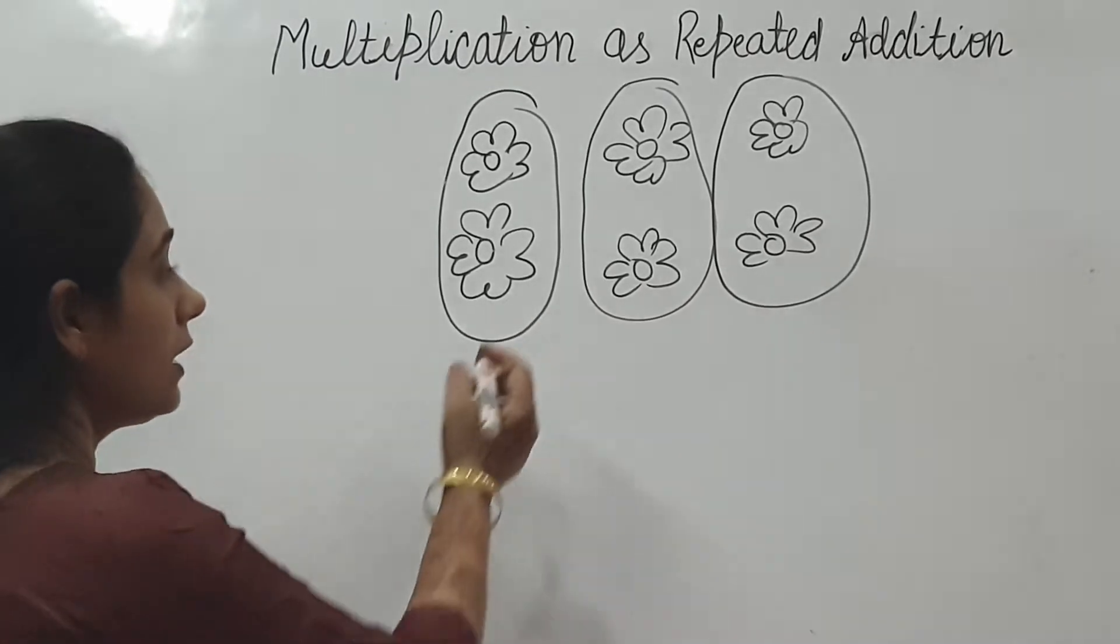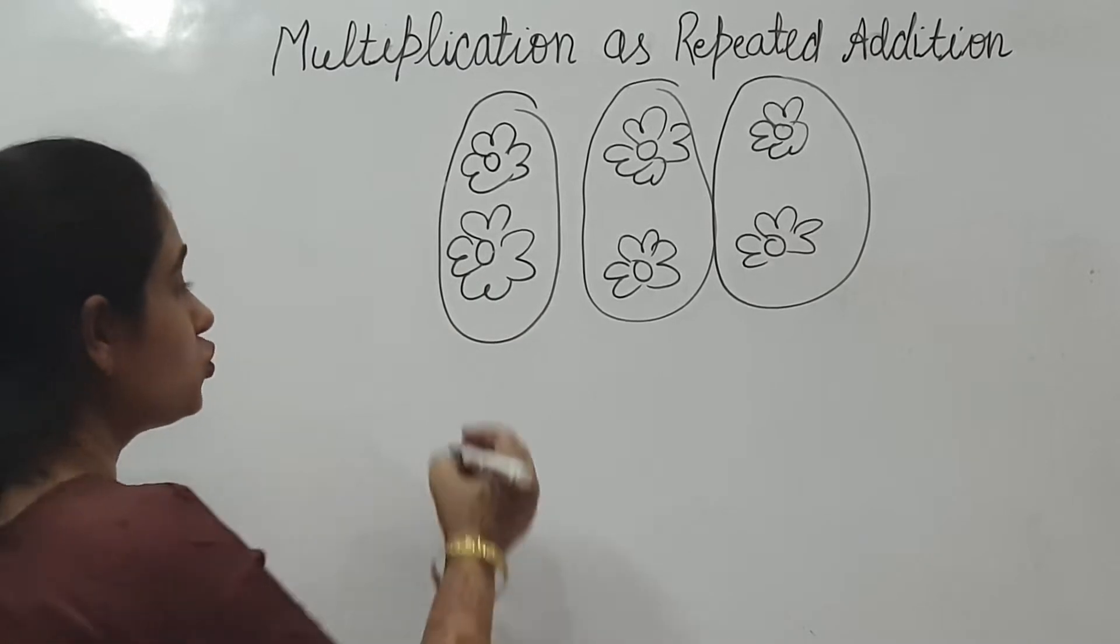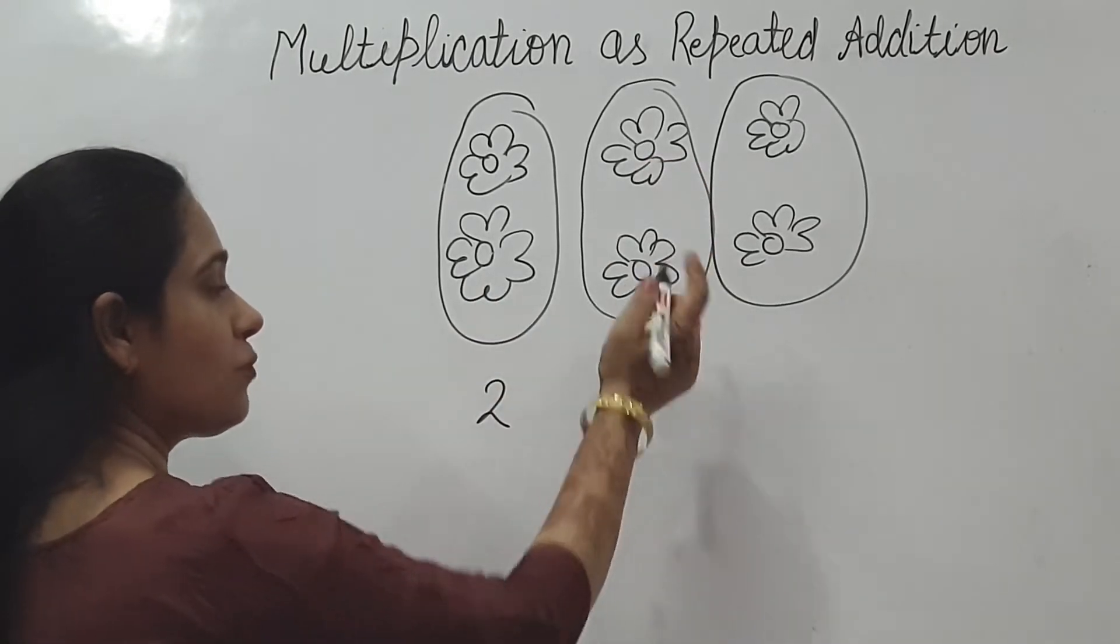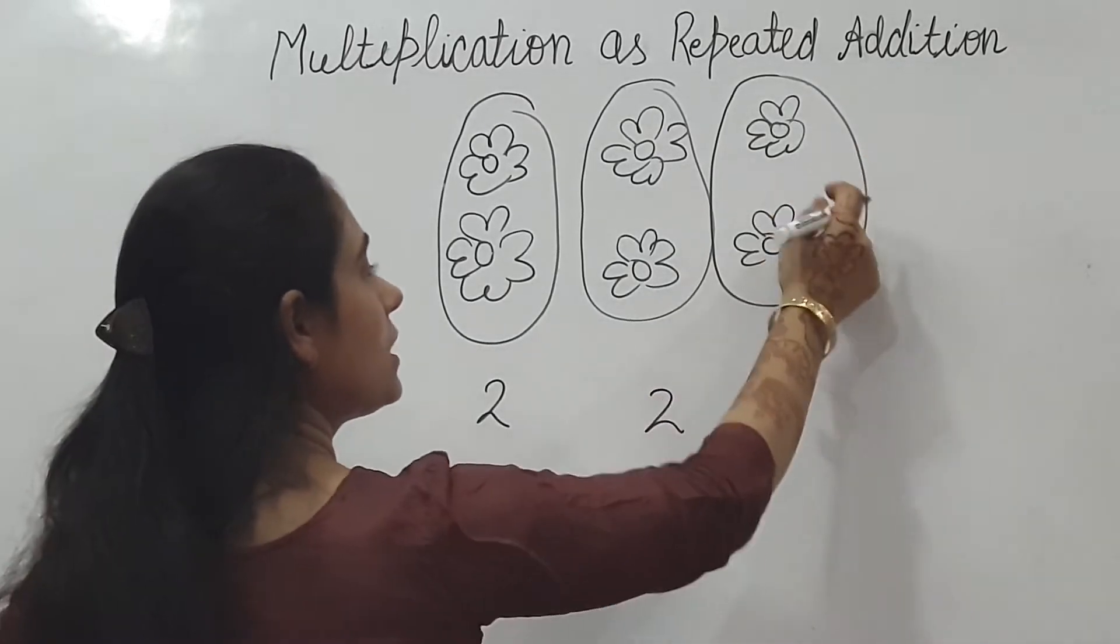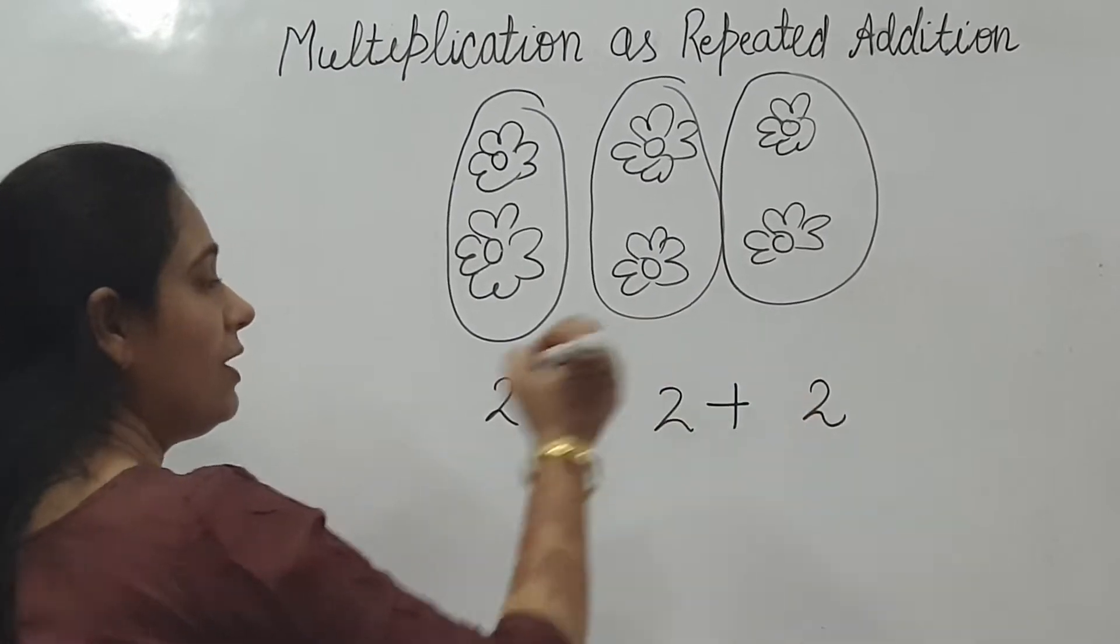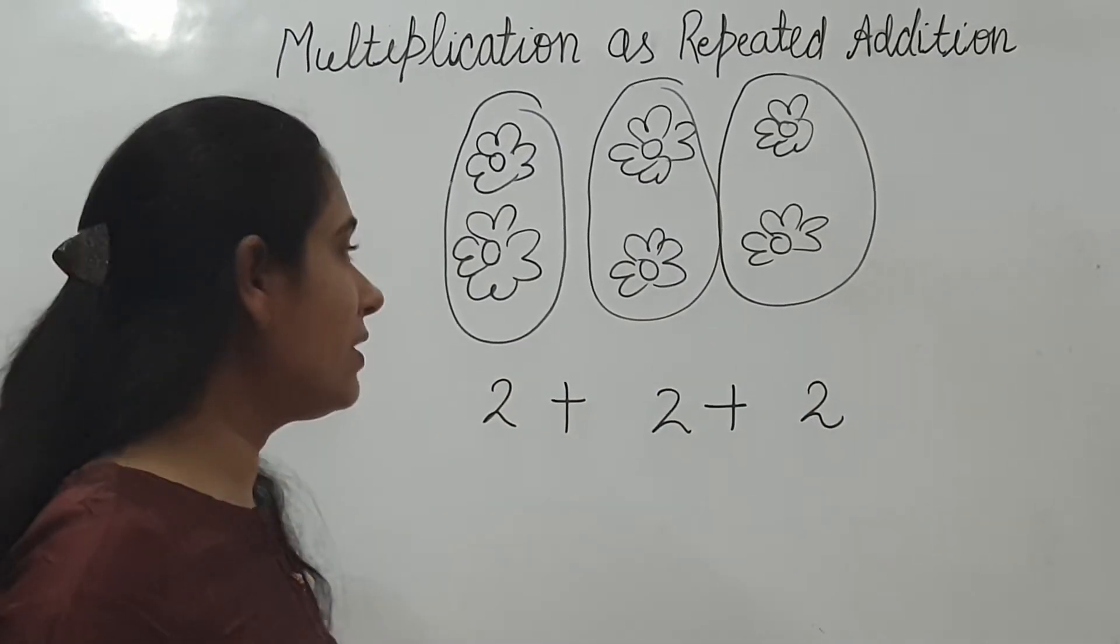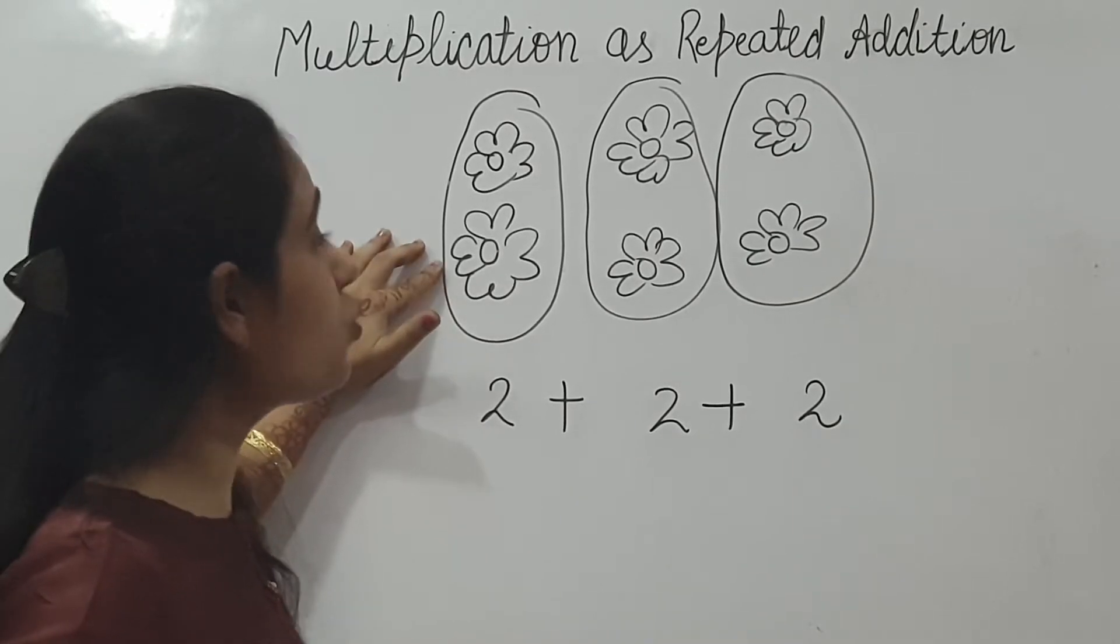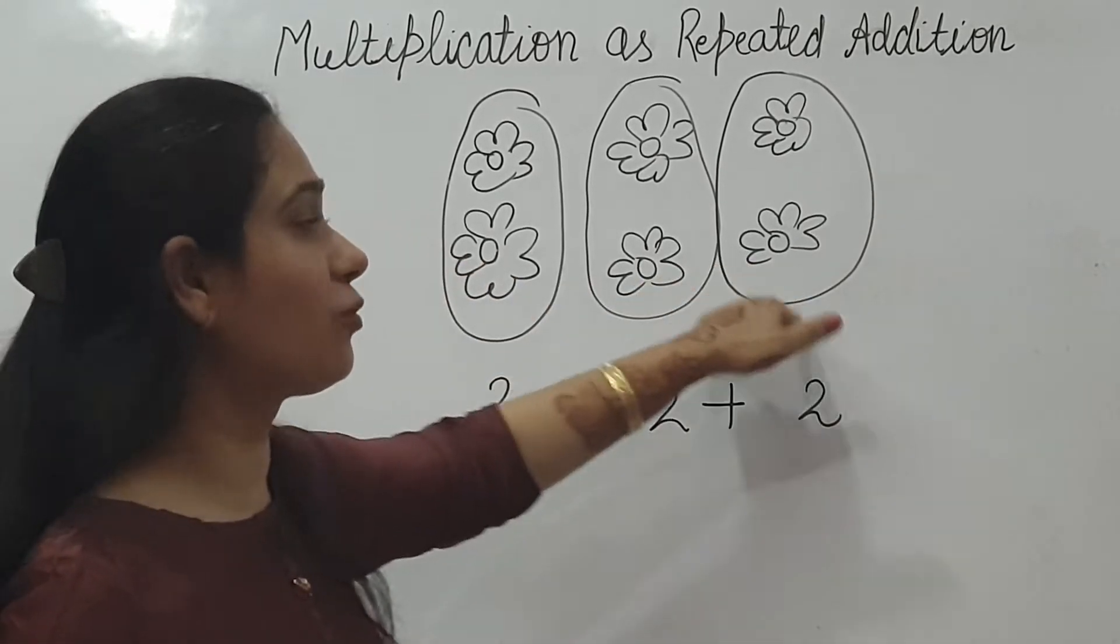How many groups have we counted? How many flowers in one group? Two. How many flowers in first group? Two. In this group? Two. In this group? Two. Now what we will do? We will add this. We will add this. You see the common thing inside.